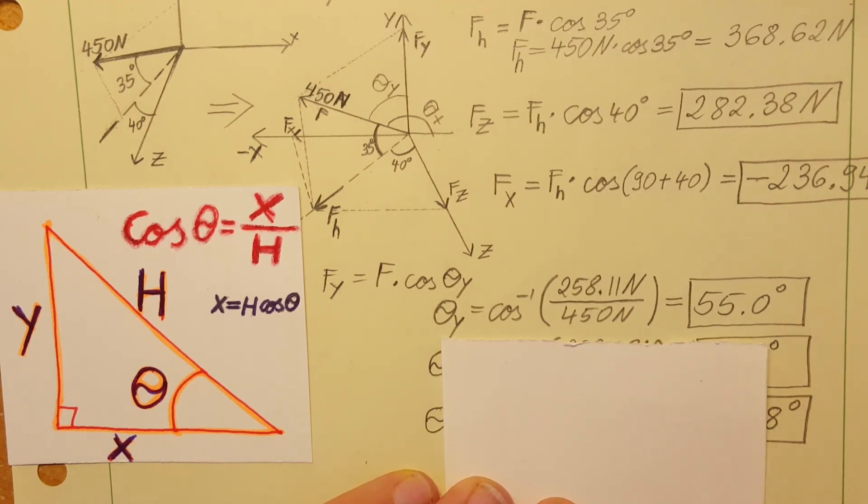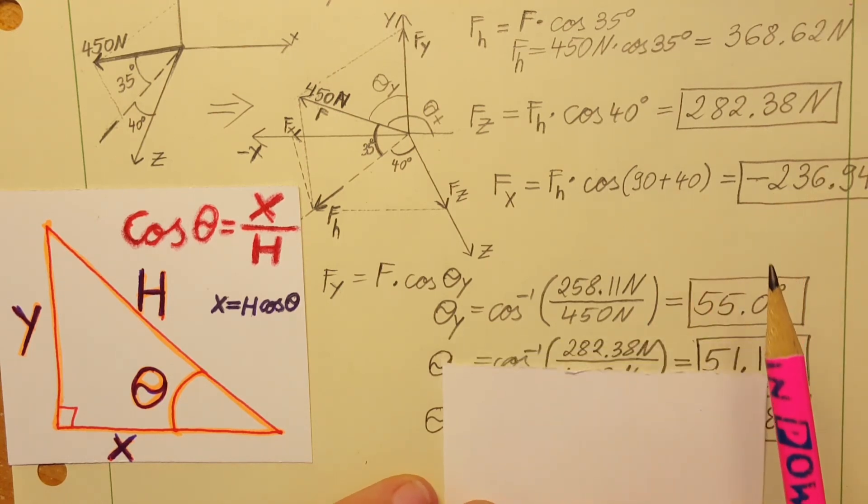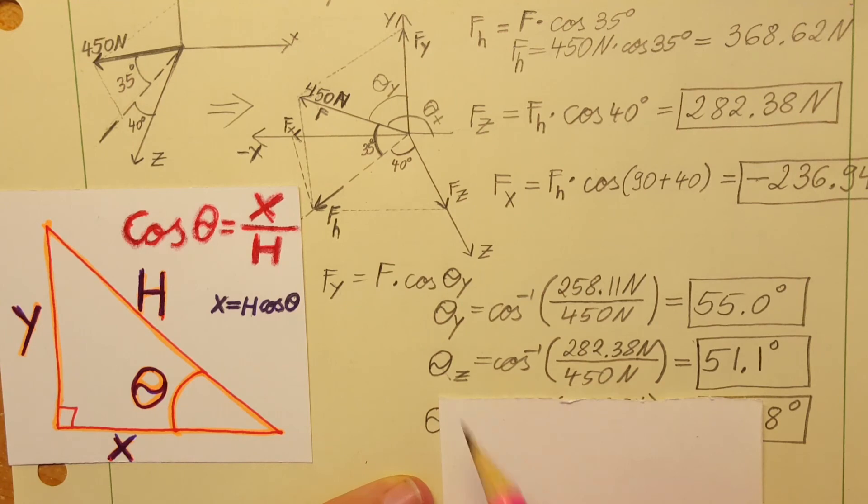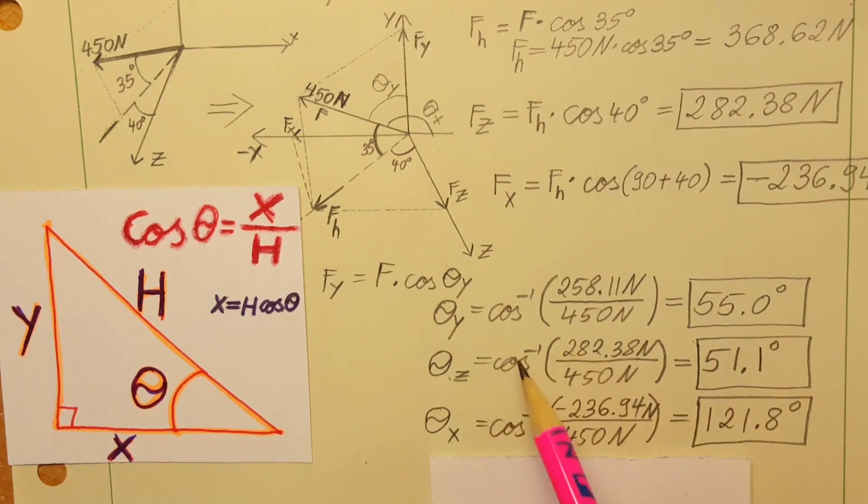Now we're gonna do the same thing for theta of Z and theta of X with negative inverse of cosine for both of them. We're gonna be able to find these values.